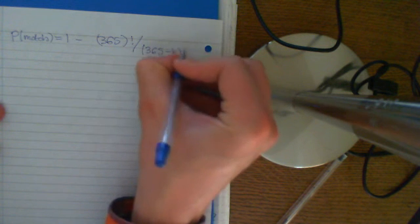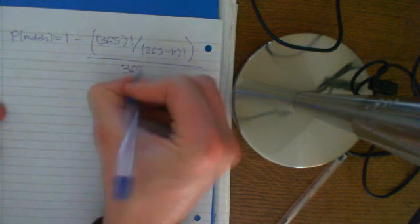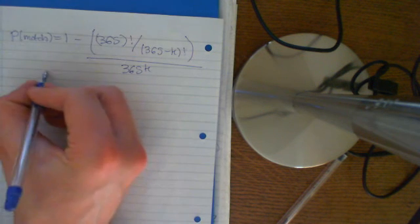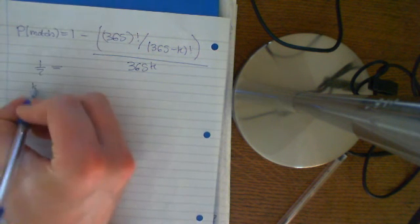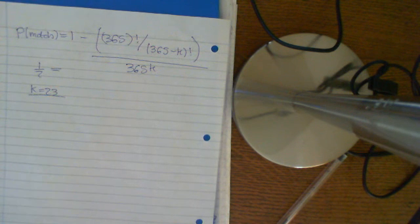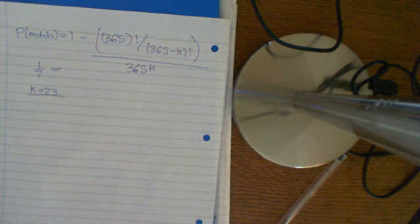Therefore, the probability that there is a match equals 1 minus 365 factorial over (365 minus k) factorial, all divided by 365 to the k. If you set that equal to a half and solve for k — noting that k must be an integer — you find that k equals 23 gives a value just over a half. So if you have 23 people at a party, the probability is over a half that two people will share a birthday, which is quite incredible.